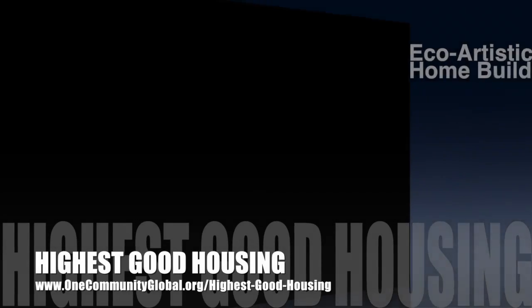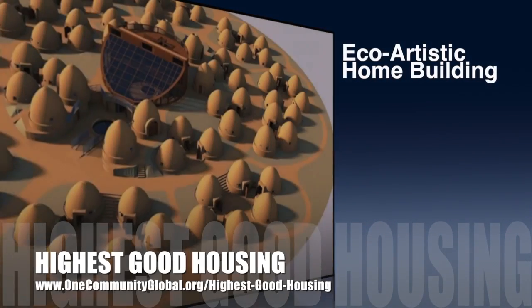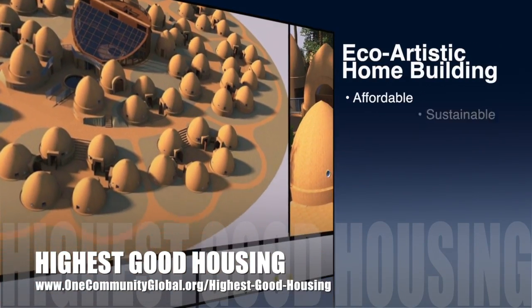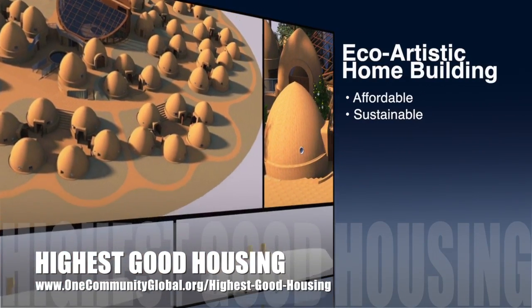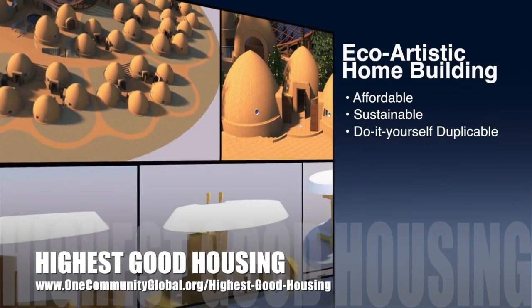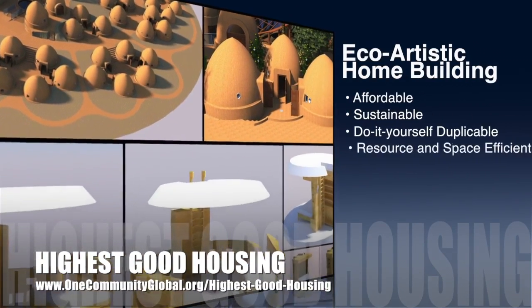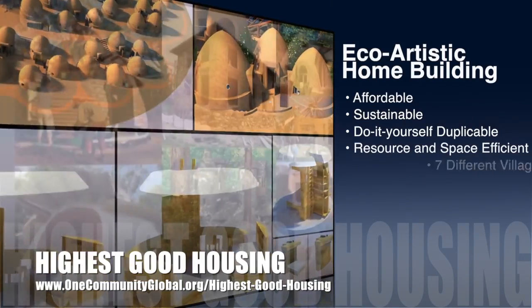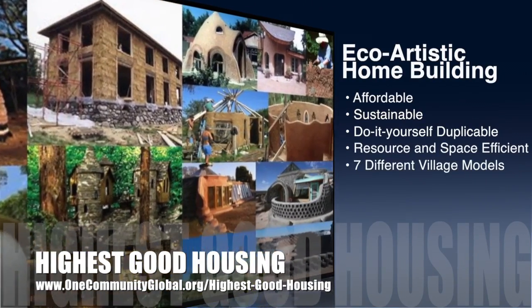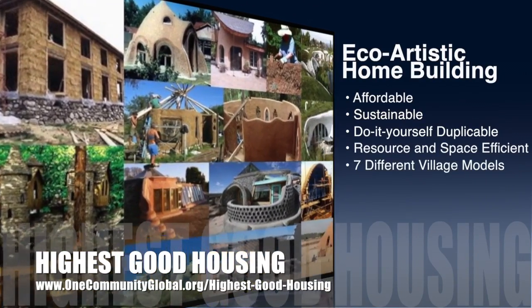The One Community approach to highest good housing is eco-artistic home building that is affordable, sustainable, do-it-yourself duplicable, resource and space efficient, and consists of seven different sustainably constructed village models.